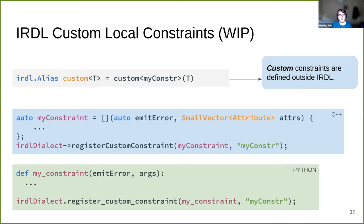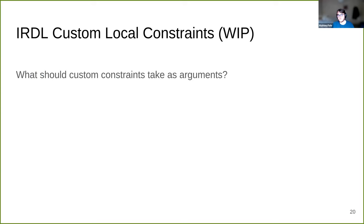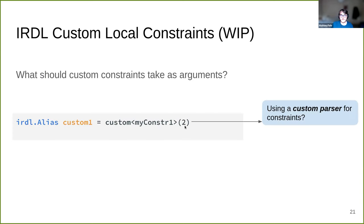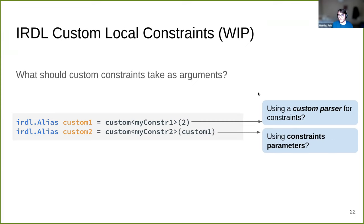Note that this is work in progress and not yet implemented, but it is something we definitely plan to implement. One open question is: how do we exactly define those custom constraints? The current example assumes arguments are a list of attributes or types, but we may want constraints that take numbers as parameters — for instance, the number of bits of an integer. Should we use a custom parser or custom constraint? Or maybe we want to nest constraints inside other constraints. This is an open question I'd like to discuss.